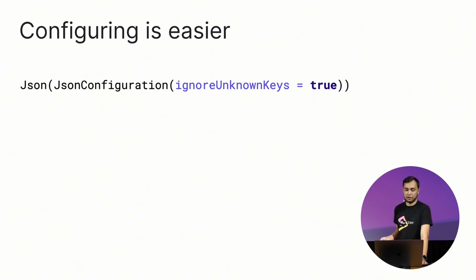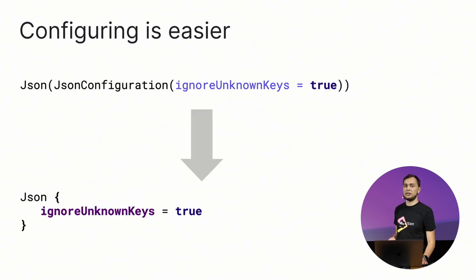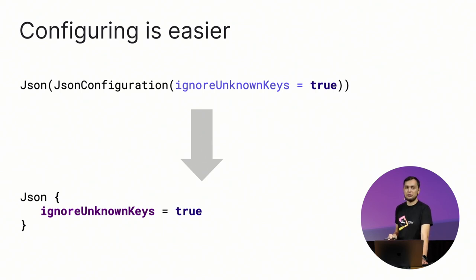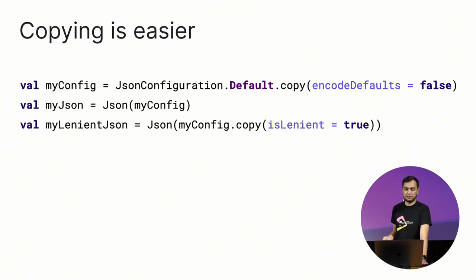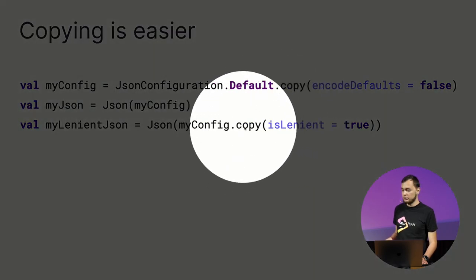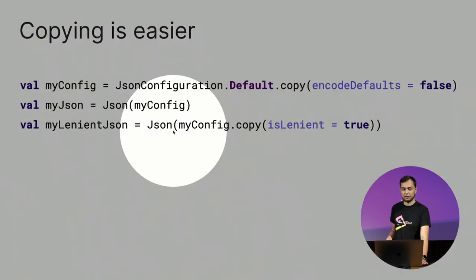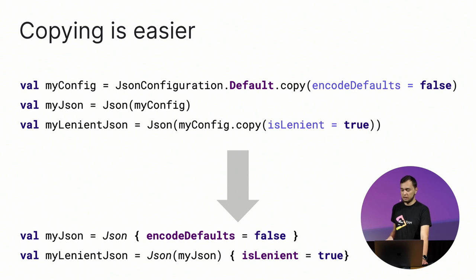We chose to solve this as follows: we no longer have a JsonConfiguration as a separate class. JSON is now configured by a DSL builder block. Instead of creating JSON from a JsonConfiguration with some parameters, you simply open a DSL builder and put all the parameters there. Now if we add a new JSON flag, it results only in additional getters and setters in the builder class and no other signatures are changed. It also becomes easier to configure JSON — previously you had to create a JsonConfiguration, create a JSON from it, and call copy to tweak it. Now you can simply create one JSON from another JSON object, making the code more compact and readable.